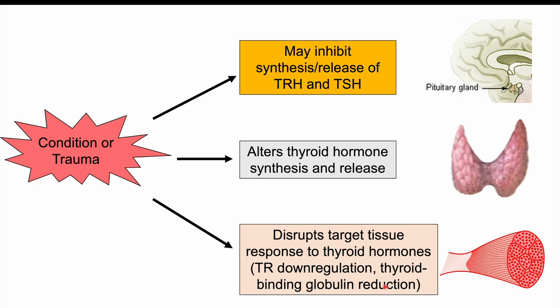A more specific way these mechanisms may be disrupted is through cytokines — more specifically, interleukins. In particular infections or autoimmune conditions, interleukins can be released and may be playing a role in some of these disruptions, including inhibition of TRH and TSH, altered thyroid hormone synthesis, and impaired target tissue response.